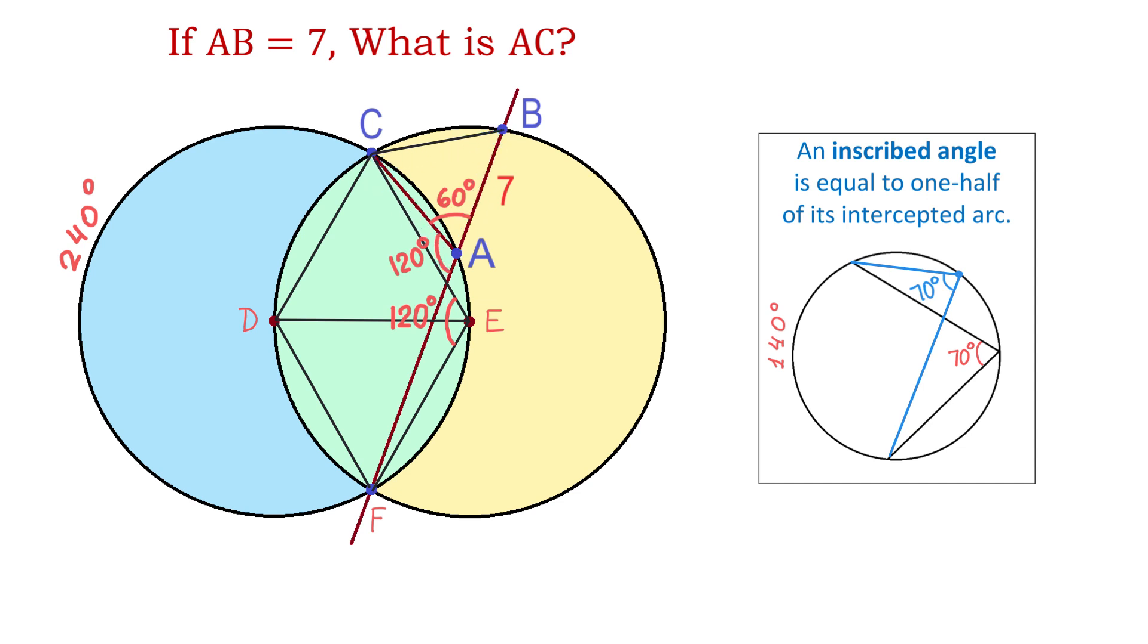Now, we need to understand that in a circle, one full rotation is 360 degrees. And if this arc is 240 degrees, then this one will be 120 degrees. And because these two arcs are equal, then this one is also 120 degrees.